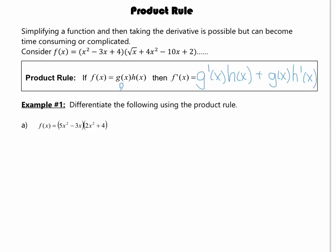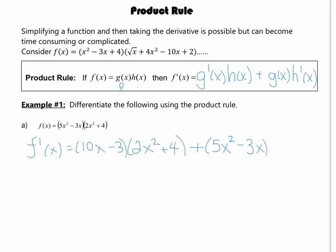Let's try our first example. We're going to take the derivative of the first piece, which is 10x minus 3, times the second piece frozen exactly the way it is: 2x squared plus 4. Then add, keeping the first one — 5x squared minus 3x — and the derivative of the second one is just 4x.